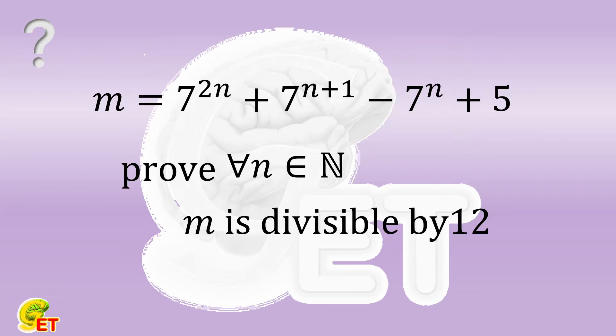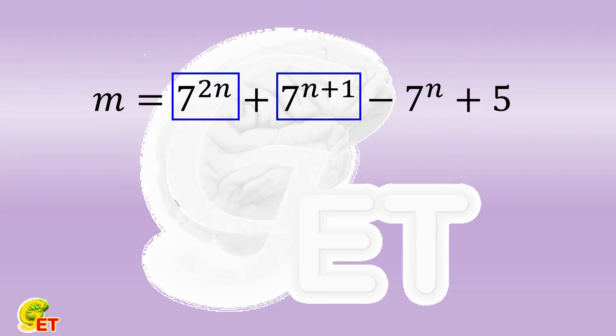There are 7 to the power of twice n and 7 to the power of n plus 1, which easily reminds us of the perfect square formula, because 7 to the power of twice n is actually the square of 7 to the power of n.